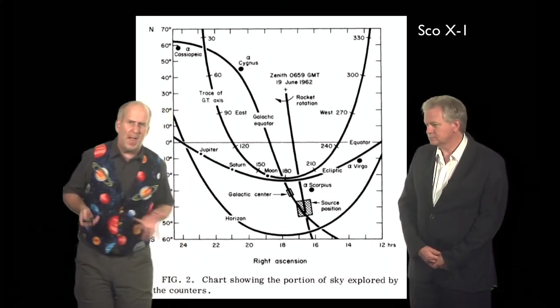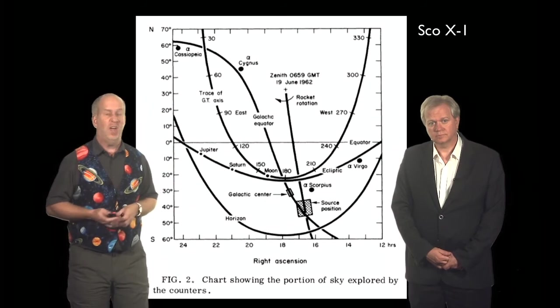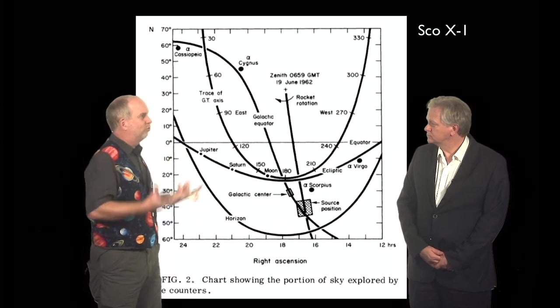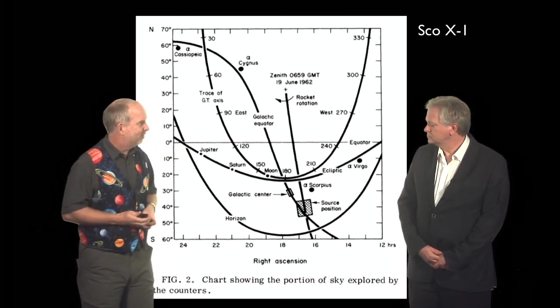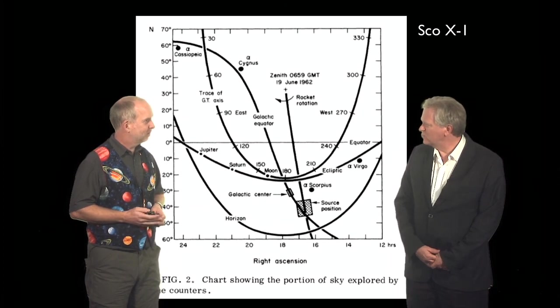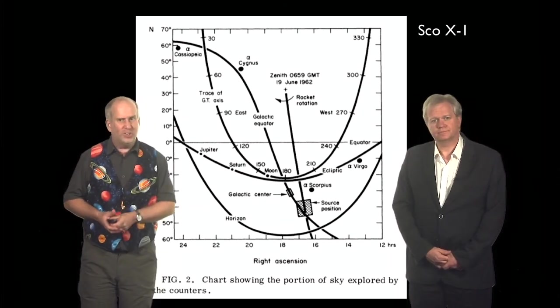So it looked like somehow a fairly normal-looking star, at best, or maybe something quite different that's even fainter than a normal star, was putting out such a huge flux of X-rays that it could ionize the upper atmosphere. Well, you would certainly need something pretty big and pretty hot to do that. So let's work out how hot you'd need it.